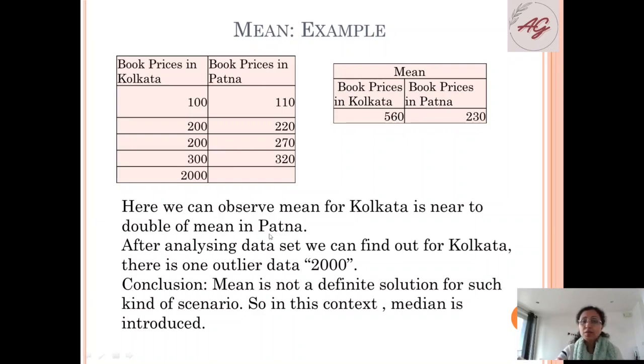Here we can observe mean for Kolkata is nearly double the mean in Patna. After analyzing the data set we can find out for Kolkata there is one outlier data. We can observe after 300 it jumps to 2000. Conclusion: mean is not a definite solution for such kind of scenario. So in this context, median is introduced.